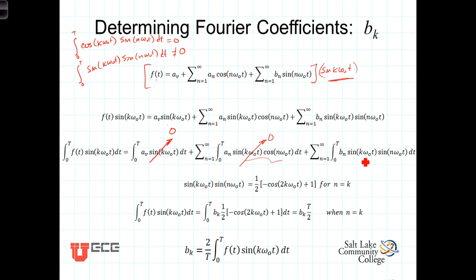Finally, we have the sine of k omega-0 t times the sine of n omega-0 t. That integral is 0 any time n does not equal k. But, when n equals k,